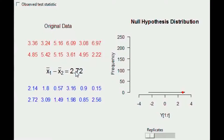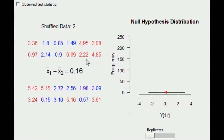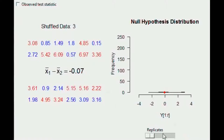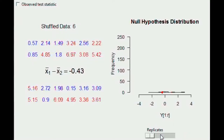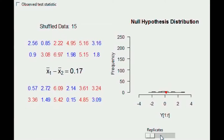If the null hypothesis is true and the treatment has no effect, we could just as easily have allocated observations to the opposite groups and gotten the same results. So we shuffle the data from group to group — only valid under the null hypothesis assumption — and measure the difference between the two sample means, obtaining a randomized test statistic. Repeating this: shuffle again, get 0.16; shuffle again, get minus 0.07. Every shuffle gives a slightly different randomized test statistic.